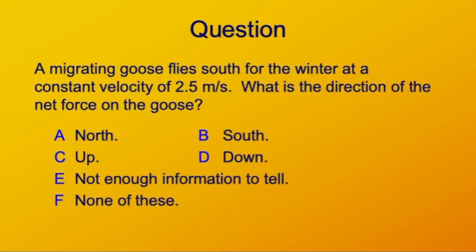How about this one? We have a goose flying south for the winter. And it's moving at a constant velocity of 2.5 meters per second south. What's the direction of the net force acting on this goose? Is it A, north, B, south, C, up, D, down, E, you don't know, or F? None of these is correct.